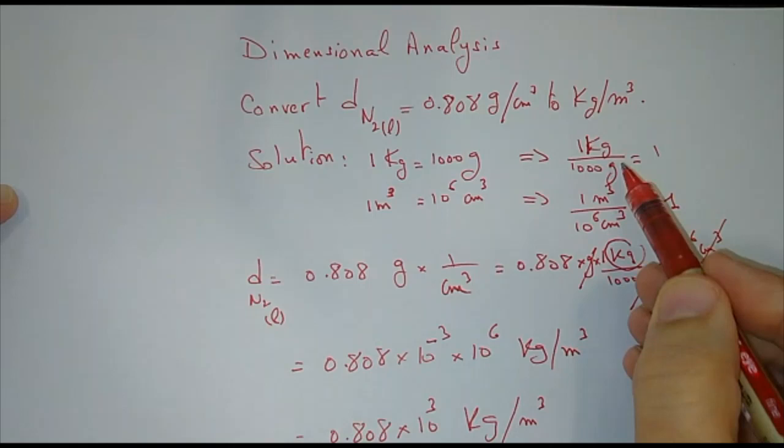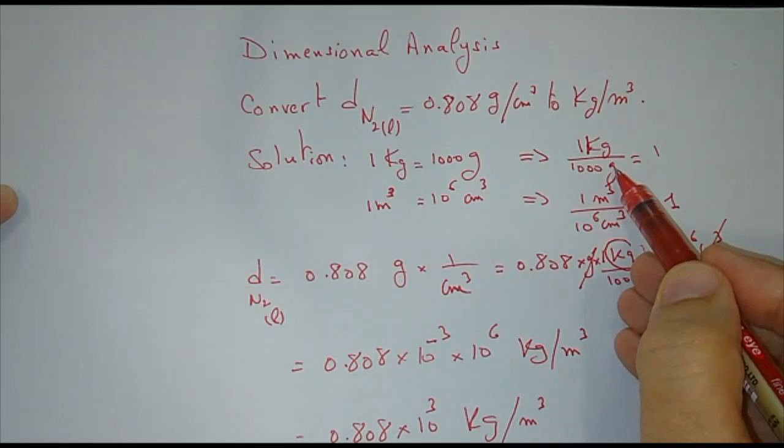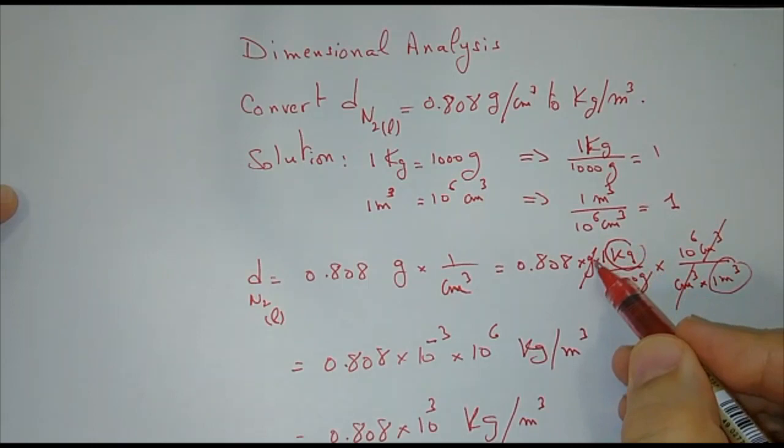So in this ratio, I need the grams to be in the denominator. So I multiply by 1 - this is 1 kilogram over 1,000 grams. Nothing will change.